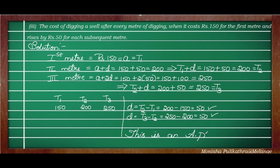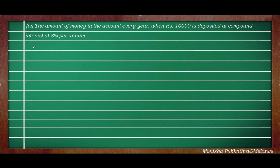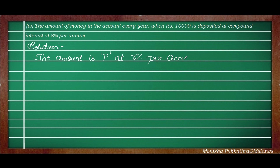Hope you understood this problem — it is the easiest one and usually asked for two marks. Coming to the fourth question: the amount of money in the account every year when Rs.10,000 is deposited at compound interest at 8% per annum. The compound interest formula is P × (1 + R/100)^N.